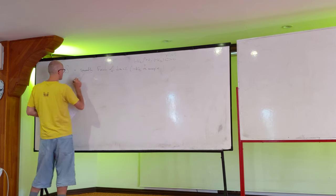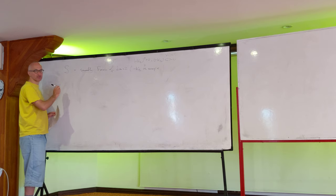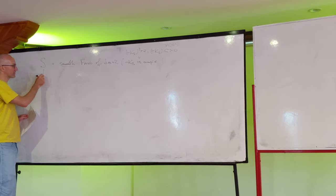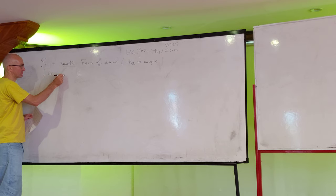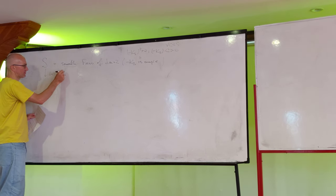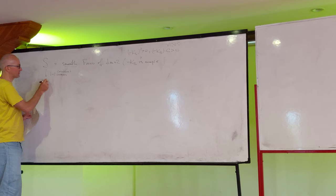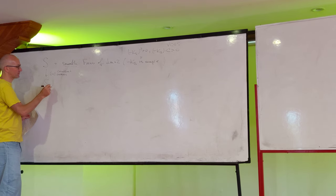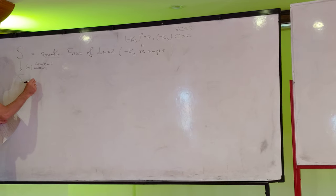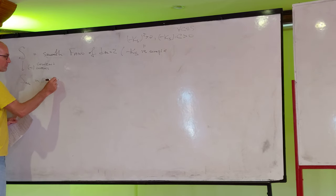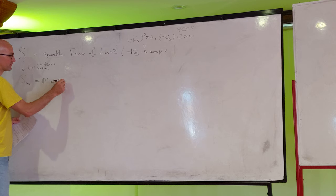And if I assume it's smooth, then this property is preserved when you contract minus one curves. And then you get some minimal surface, and since it has no minus one curve, you have two choices: Either this is P2 or P1 cross P1.